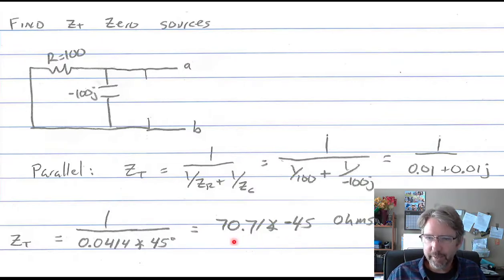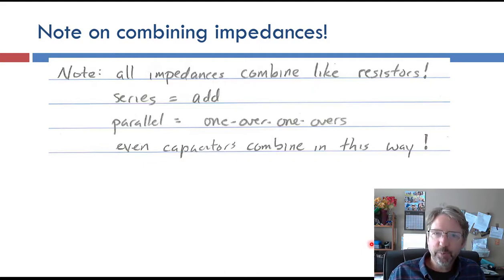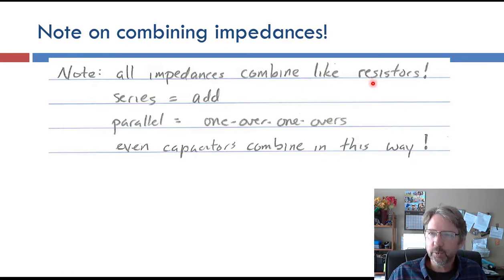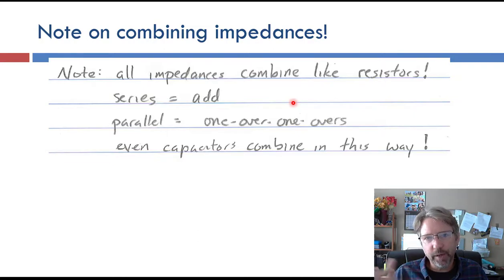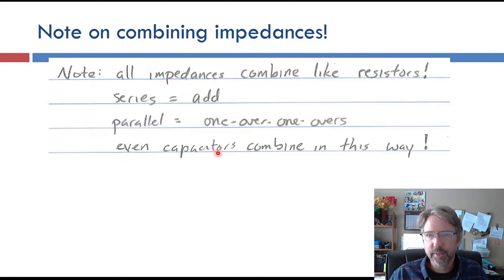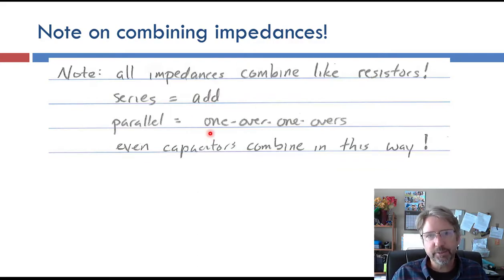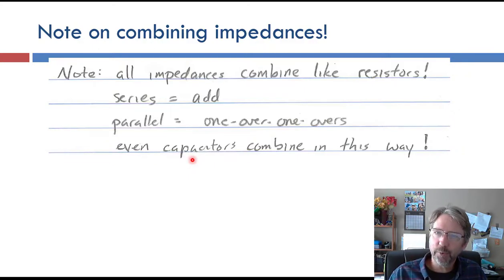There's a very common mistake people make here because we're used to capacitors behaving differently. With differential equations, resistors and inductors in series add, in parallel it's one-over-one-overs, and capacitors were the opposite. This is NOT the case for impedances. Everything — including capacitors — combines like resistors. If it's the impedance of a capacitor, it's just an impedance: in series you add, in parallel you one-over-one-overs. Don't treat capacitors differently when doing phasor math.